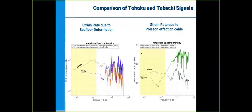If we compare both the Tohoku and Tokachi datasets due to seafloor deformation and the Poisson effect on the cable — which has a slightly higher magnitude than the compliance effect — and if we stack the signals of the Tohoku dataset to make it comparable to the kilometer separation of the Tokachi OBS stations, they are somewhat comparable in quality. For the signal due to pressure variations, we clearly see the tsunami signature. Whereas for the Tohoku dataset, it's a bit difficult to have the resolution because the Tohoku dataset was only about 500 seconds in length.